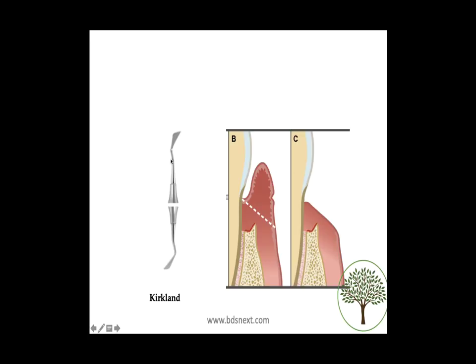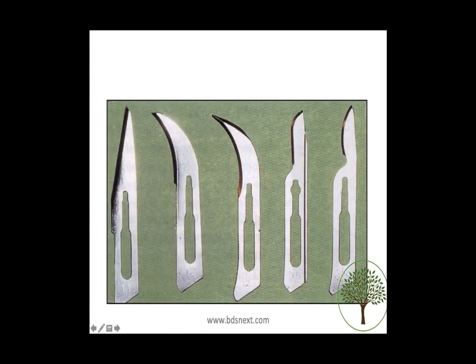The external bevel incision is given using a Kirkland knife — a very large knife with a kidney-bean shaped end, in sharp contrast with Orban's knife. The kidney-bean ended Kirkland knife is used for external bevel incision in gingivectomy. As the name suggests, gingivectomy involves cutting a lot of gingiva, and that is where the external bevel incision with the Kirkland knife is used.